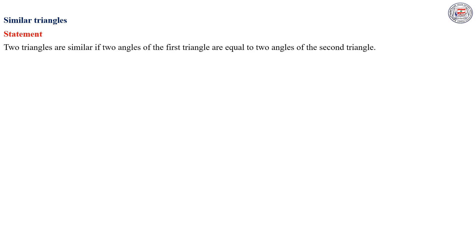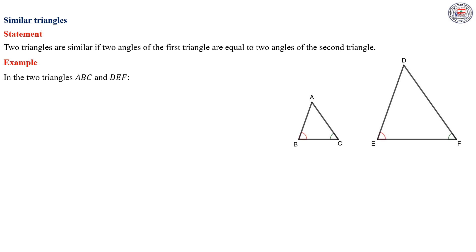Now we will learn about the similarity of two triangles, which is a new property for this year. We say that two triangles are similar if two angles of the first triangle are equal to two angles of the second triangle. For example, in triangles ABC and DEF, if angle ABC equals angle DEF, and angle ACB equals angle DFE, then we can directly deduce that ABC and DEF are similar.